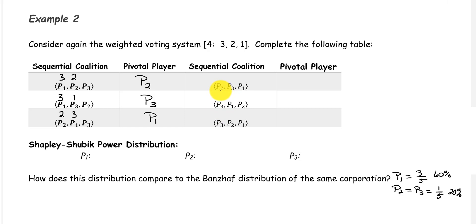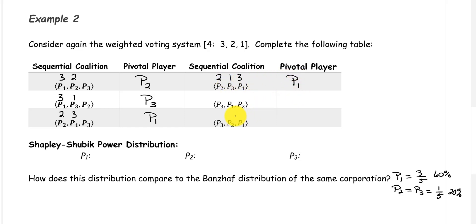The sequential coalition with player 2, player 3, player 1: player 2 has a weight of 2, player 3 has a weight of 1, and we still have not met our quota of 4. So player 1 gets added in with their weight of 3, and now we have a total weight of 6, which meets our quota. So player 1 was the pivotal player there.